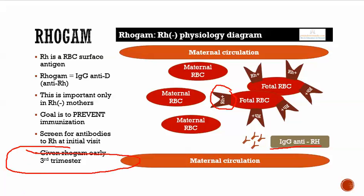RhoGAM is going to prevent the immunization from happening. You give these IgG anti-RH antibodies, and if any fetal blood gets into the maternal circulation, these antibodies very rapidly bind to the antigens and coat them. That causes very quick opsonization and removal by macrophages, essentially eliminating the fetal red blood cells — the antigenic stimulus for the immune response — very quickly. So you can think of it as: if you give RhoGAM, the antigens will be gone before they can even cause the immunization or cause the maternal immune system to respond.